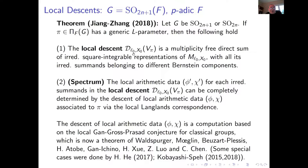The local descent at the first occurrence is a multiplicity-free direct sum of irreducible square-integrable representations of the stabilizer, with all irreducible summands belonging to different Bernstein components. That is a very tricky point. The spectral decomposition — the arithmetic data — can be completely determined for each summand by local Langlands correspondence. This descent computation is based on local Gross-Prasad conjecture for classical groups, which is now a complete theorem for generic parameters.